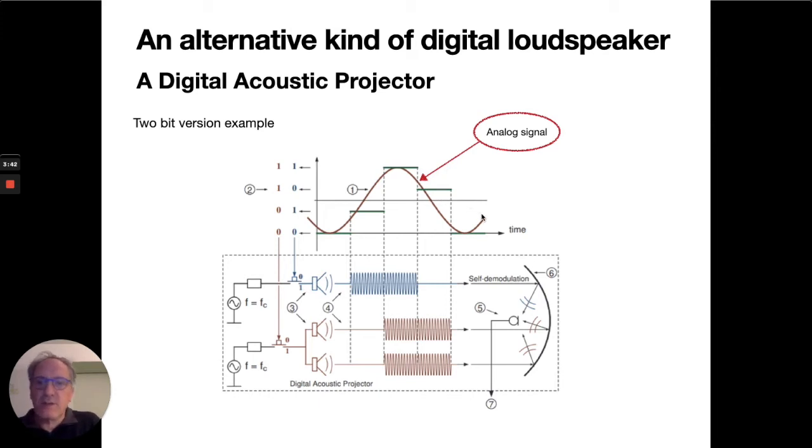Here it is a sinusoidal signal, but the same principle applies to any signal. The signal is sampled and quantized using an analog-to-digital converter. Each quantified value is converted into an n-bit binary word—here a 2-bit binary word. These binary words are the inputs of the digital loudspeaker.